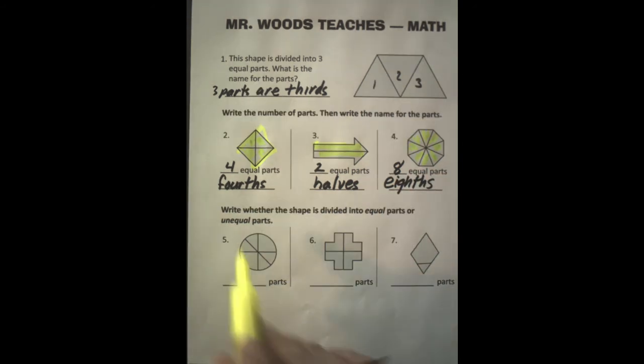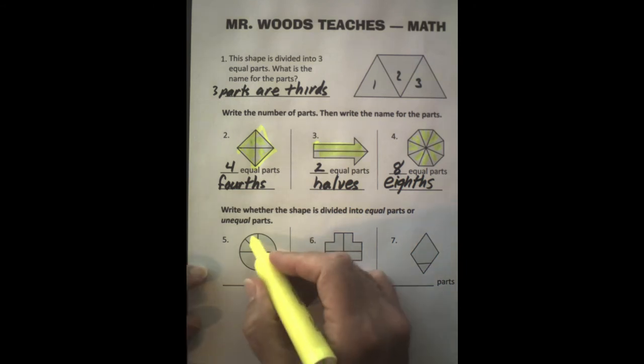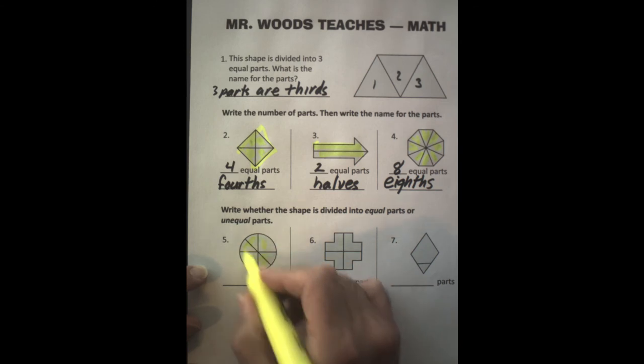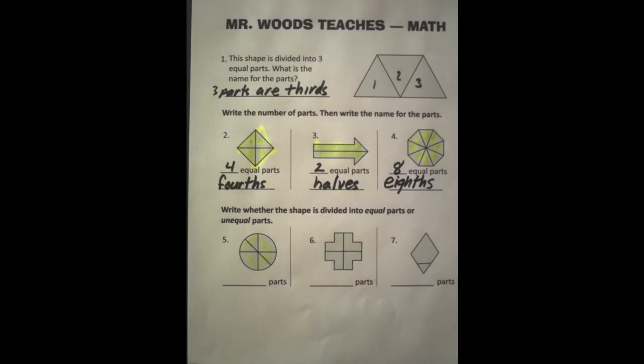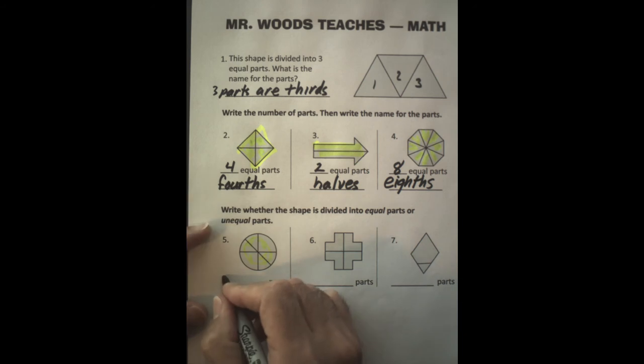Let's look down here. It says write whether the shape is divided into equal parts or unequal parts. Let's take a look. Well, these parts equal this part and this part equals this part. They don't equal a whole so the whole thing would be unequal parts.